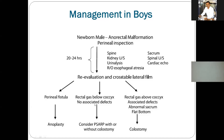In case of no associated defects and on X-rays the baby has a rectal gas shadow near to the coccyx, it is the intermediate variety. Sometimes a single procedure is advised, sometimes a staged procedure — colostomy and stoma are sometimes made and sometimes not. PSARP, posterior sagittal anorectoplasty, is the specific surgical procedure.